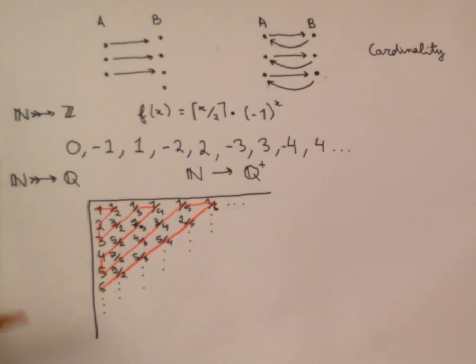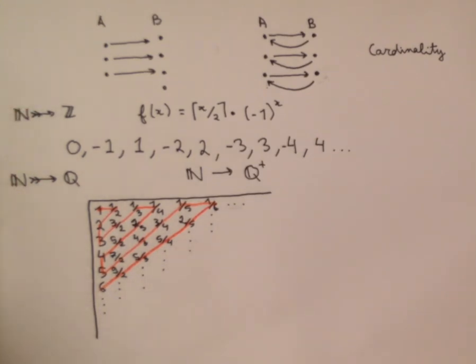And so the natural numbers and the rational numbers have the same cardinality.